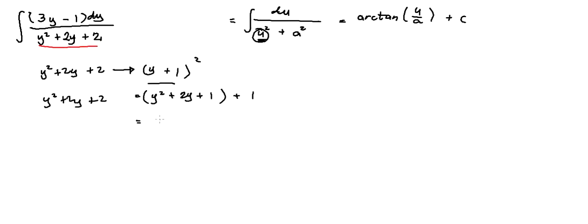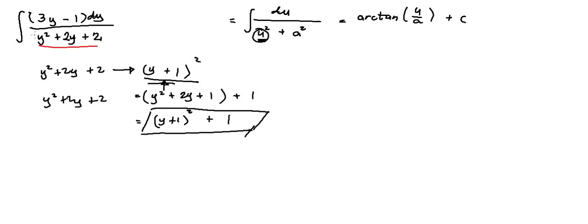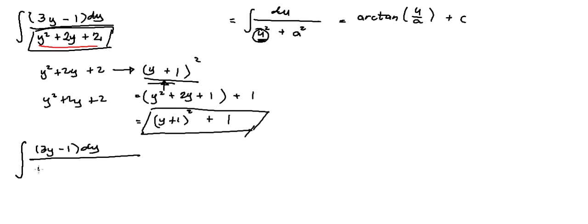We can write y squared plus 2y plus 2 as (y plus 1) squared plus 1 squared, since 1 squared is just 1. So this expression is equal to (y plus 1) squared plus 1 squared. After determining this, we can now simplify our given integrand: we have (3y minus 1) dy all over (y plus 1) squared plus 1 squared.